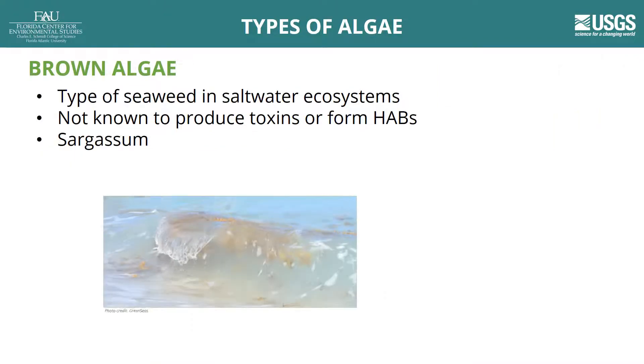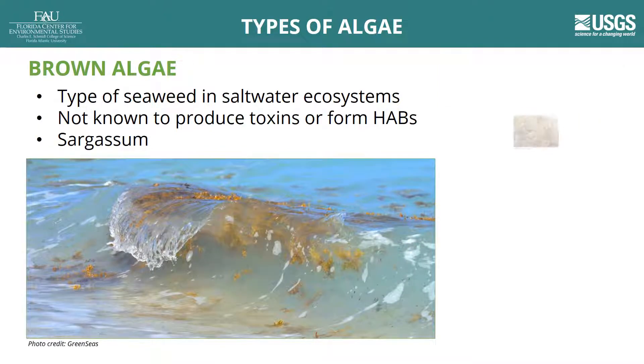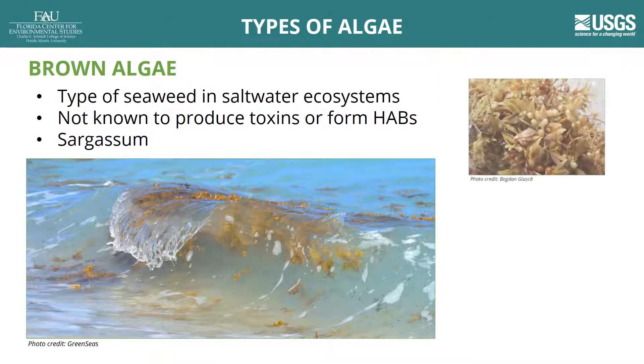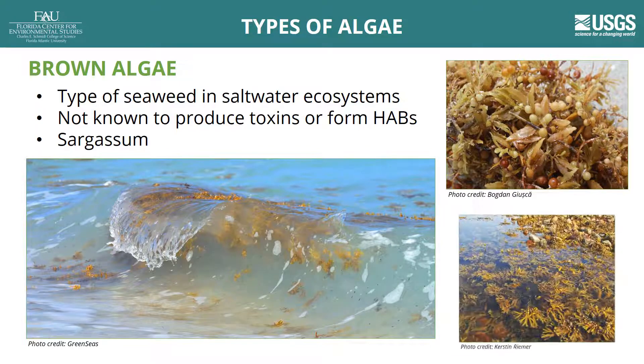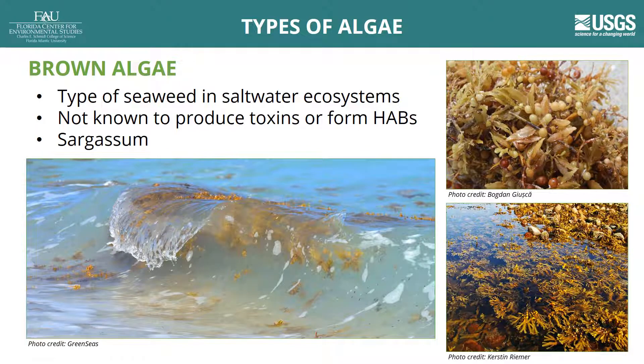Like red algae, brown algae include a type of seaweed only found in saltwater ecosystems, and they are not known to produce toxins or form HABs. Sargassum is a type of brown algae that can grow in thick masses in the water and wash up on beaches.